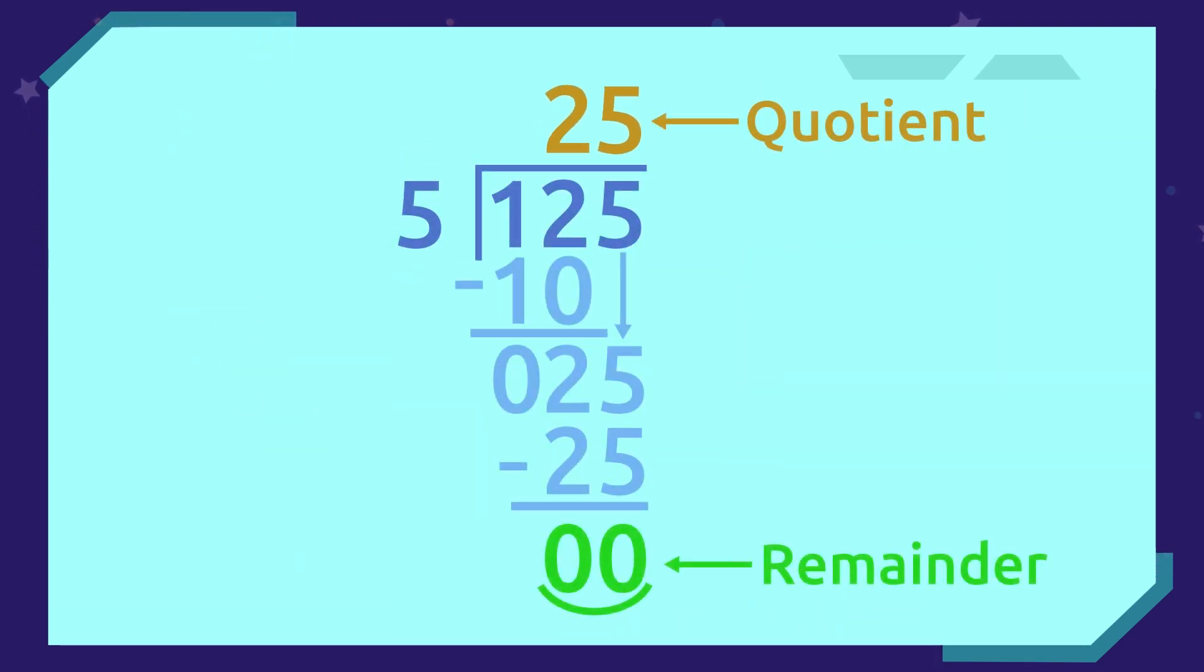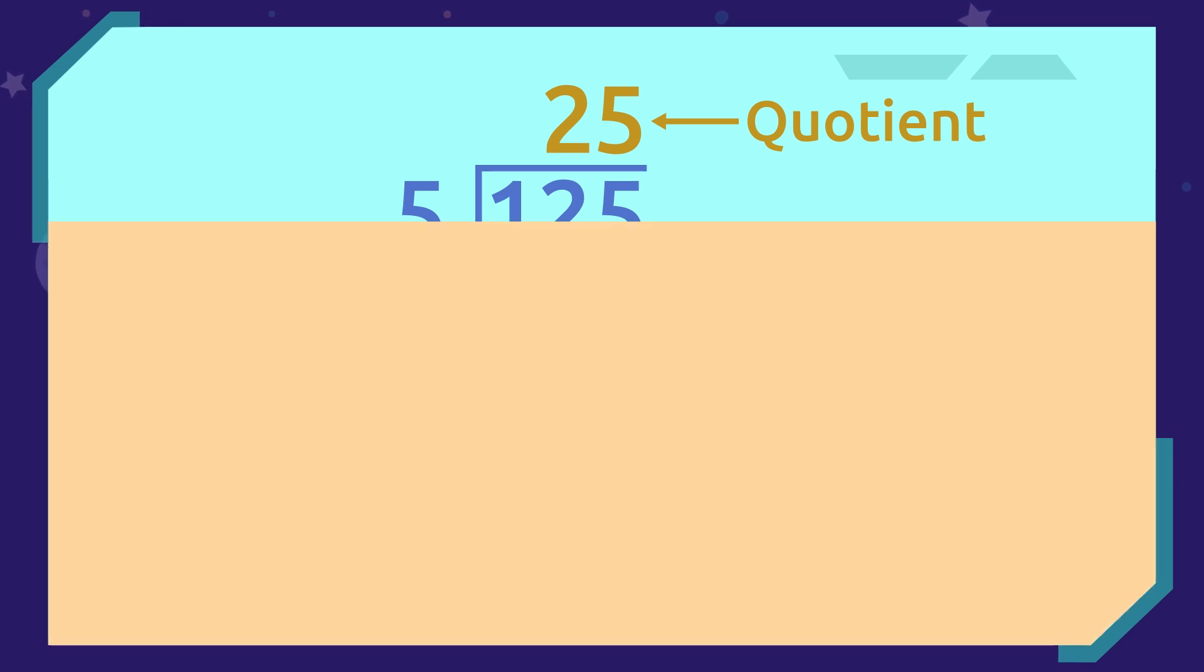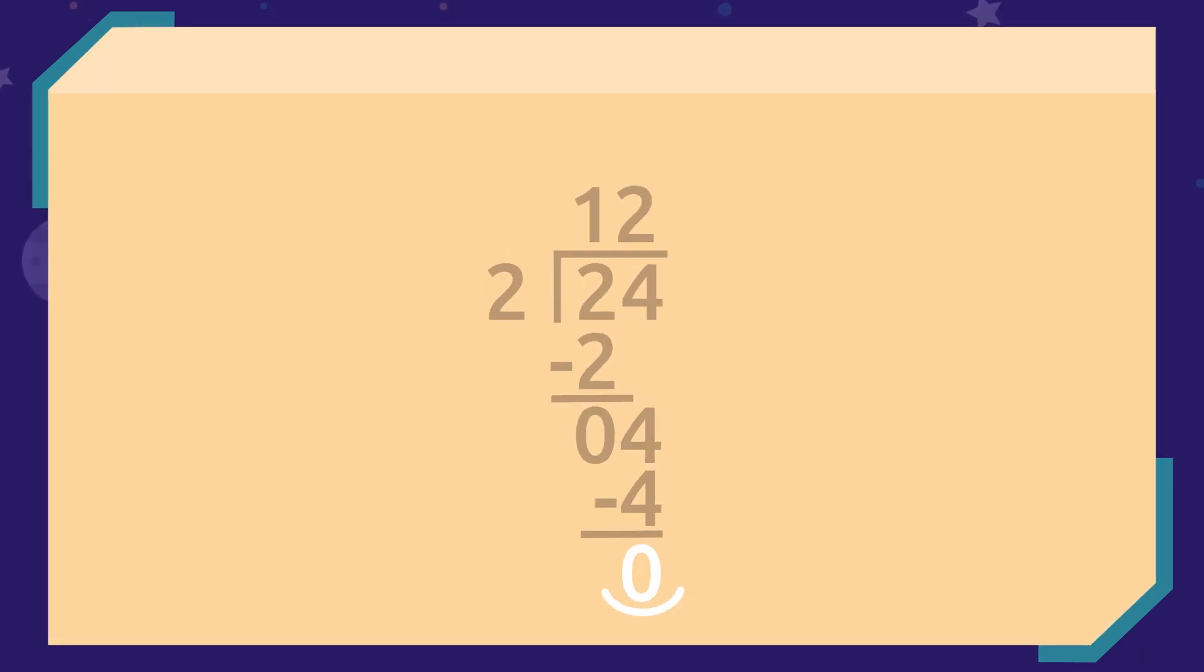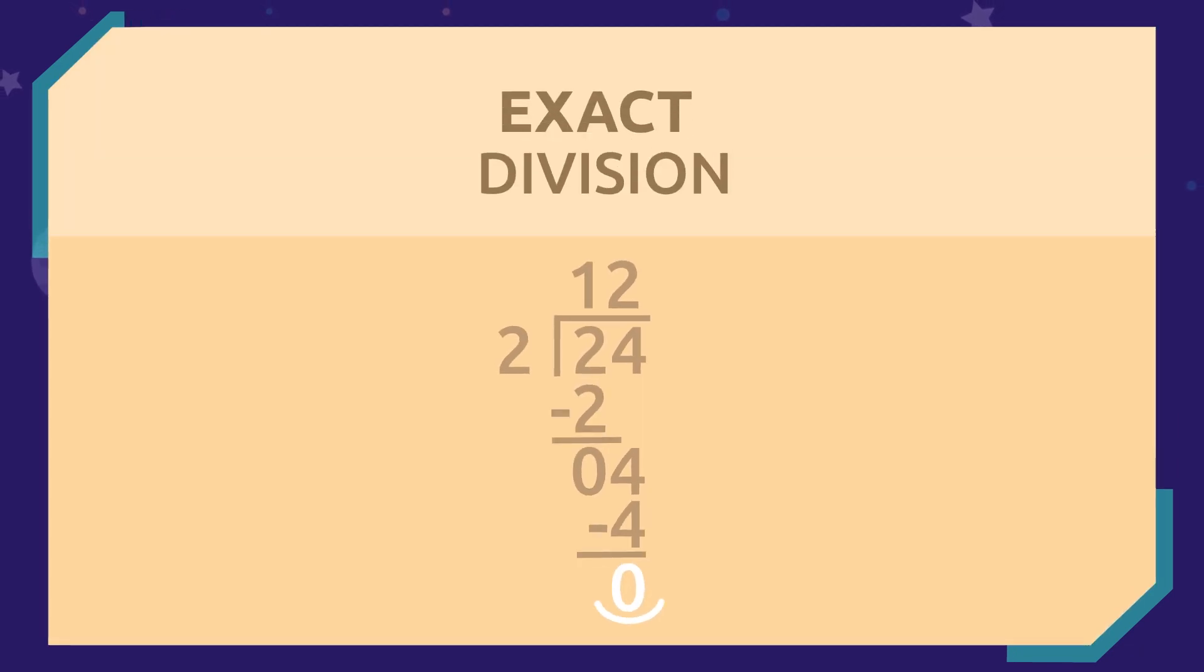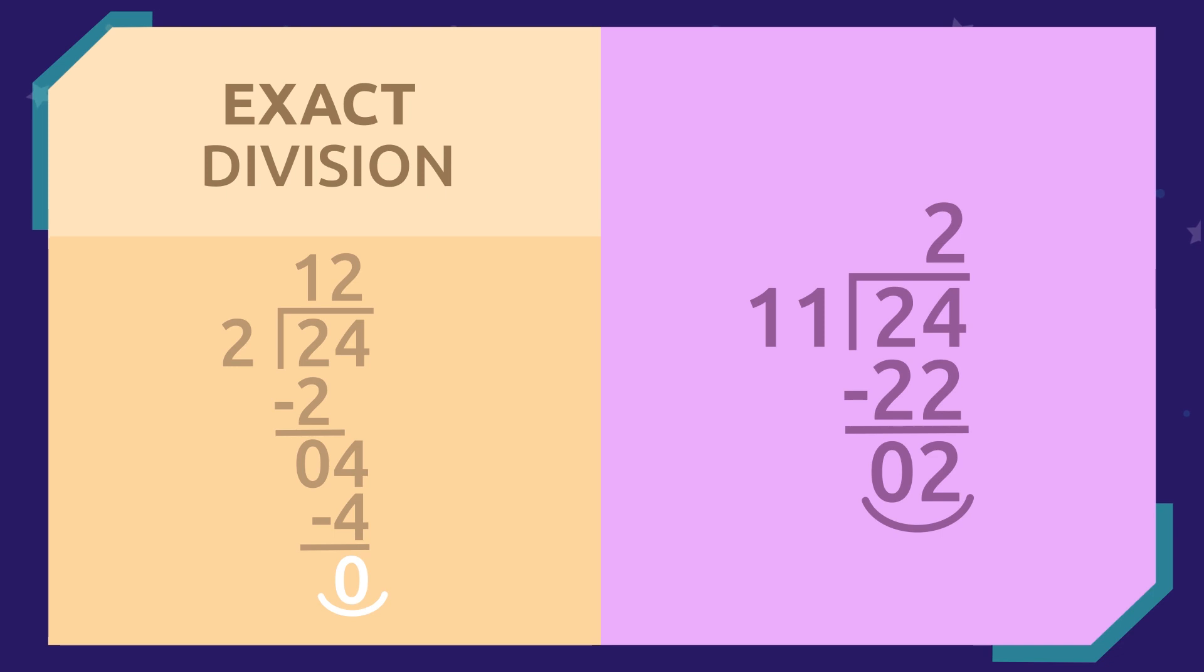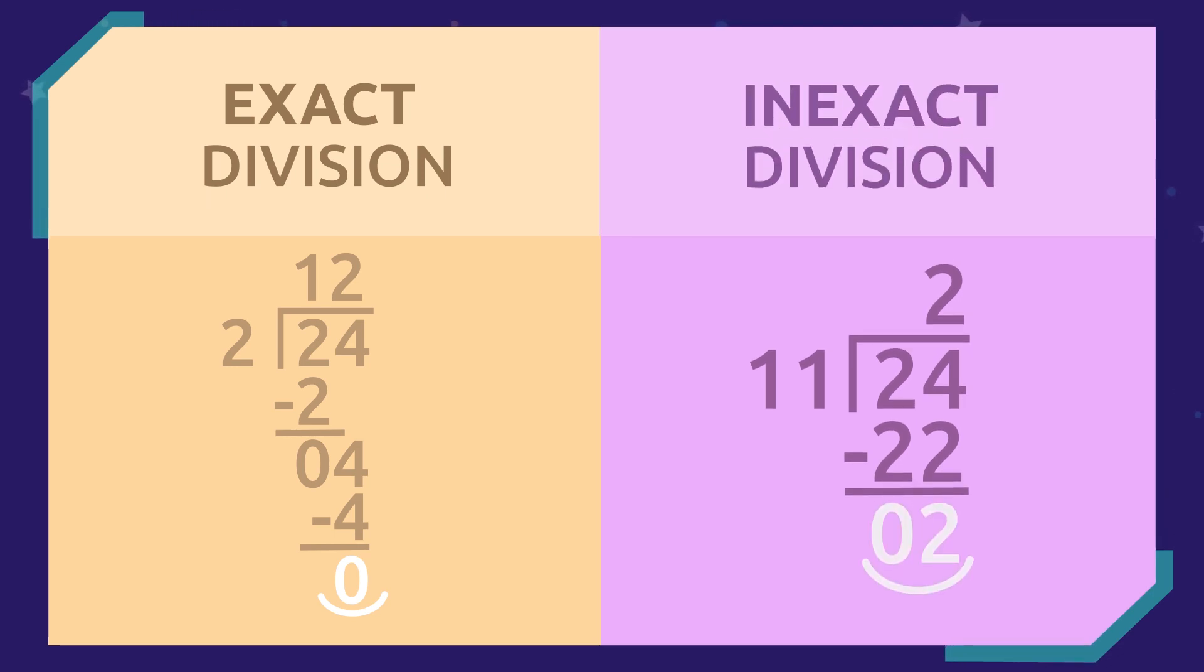When we don't have any more numbers left to divide, we arrive at the remainder. If the remainder of the division is equal to 0, it is said to be an exact division. This means we are able to equally divide the dividend by the divisor without any numbers left over. When the remainder is not 0, we have leftover numbers after dividing the dividend by the divisor. This is called inexact division.